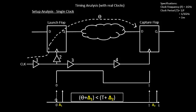Initially the window was between one set of points, and now the window is shifted, and that's what has been written down in the form of an equation. It says that theta, which is the combinational delay, plus delta1 should now be less than T, which is the time period of 1 nanosecond, plus delta2, which is the capture clock network delay.